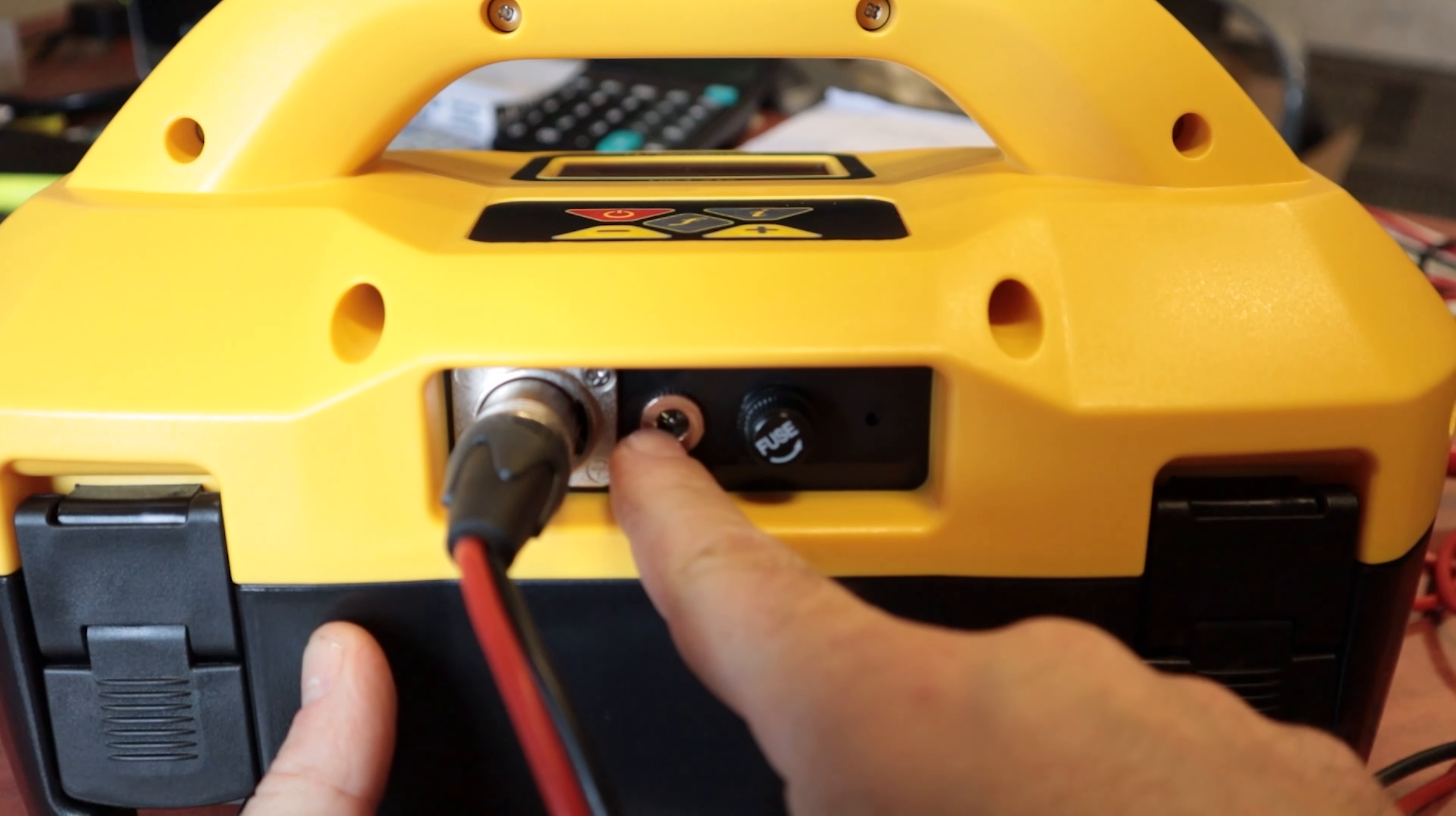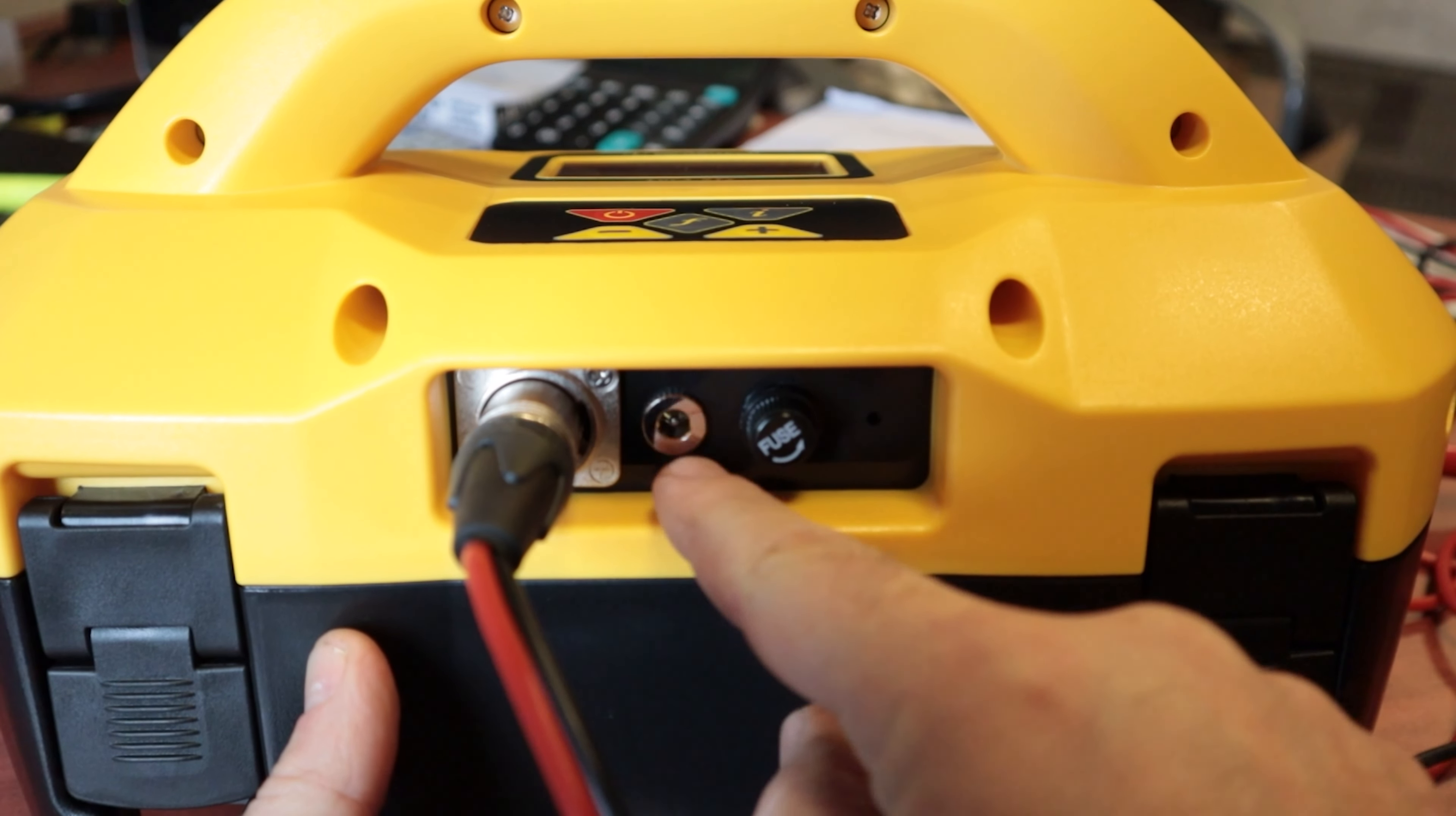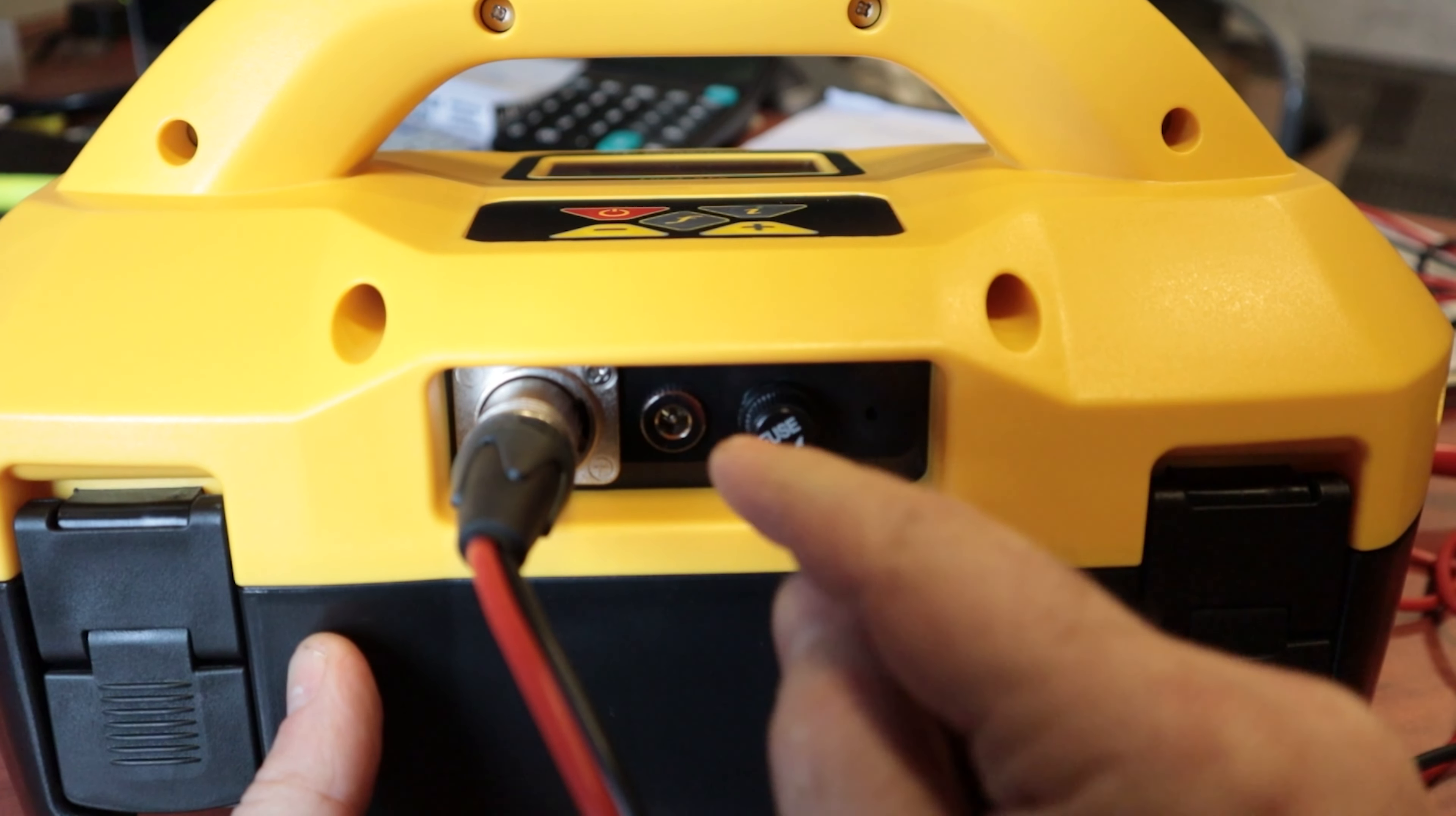On the front of the transmitter here this is obviously our lead connection. We have our connection for our battery charger and right next to that is a fuse.